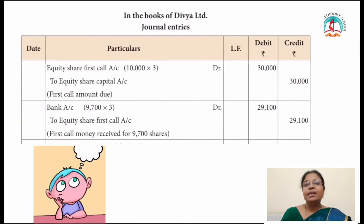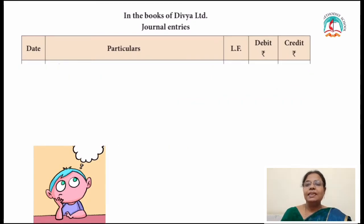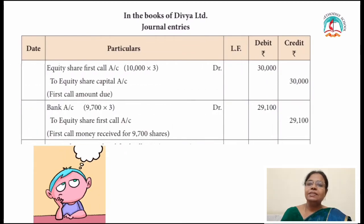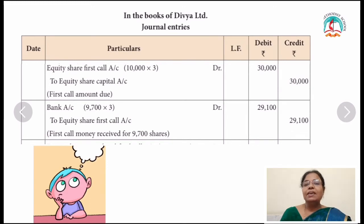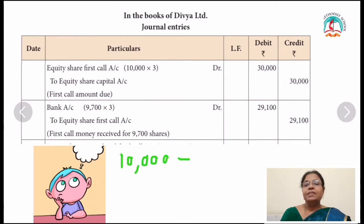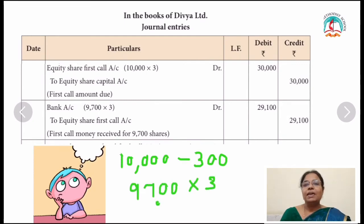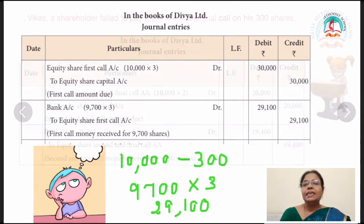The next journal entry is for receiving the call money. Equity share first call account: 10,000 into 3 = 30,000 — to equity share capital account. That is the call amount due. We have to receive 30,000 rupees. But in the problem it is given one shareholder failed to pay on 300 shares on first call. So while receiving the money we have to reduce 300 shares. Bank account: 10,000 minus 300 = 9,700, at the rate of 3 — to equity share first call: 29,100. First call money received for 9,700 shares.